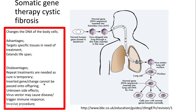However, disadvantages are that this is a repeated treatment — the cure is only temporary. The reason for that is that these healthy cells containing the healthy gene will eventually die off and need to be replaced by new cells, and those new cells will contain the unhealthy gene. So in order for this individual to benefit, they'd need this process to be repeated on a regular basis. Also, the inserted gene cannot be passed on to any offspring, meaning any offspring would still contain the genetic information for cystic fibrosis.